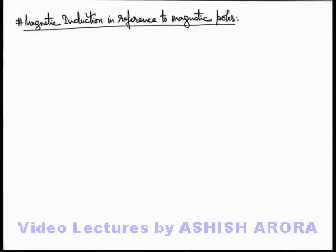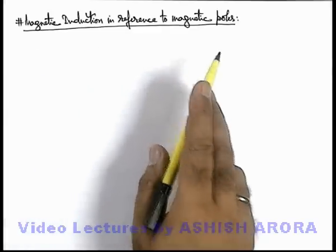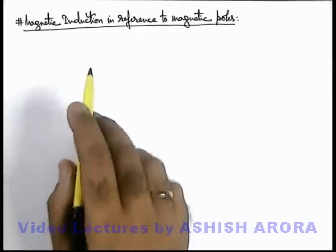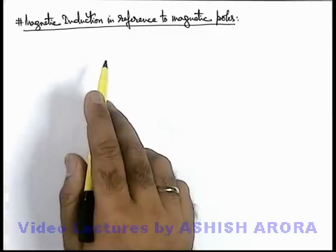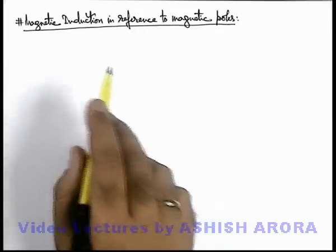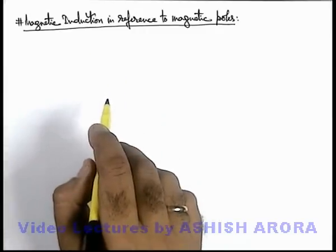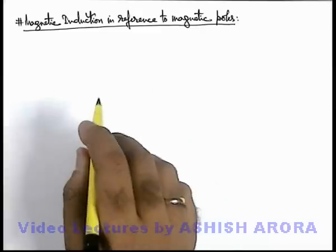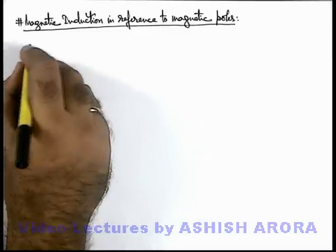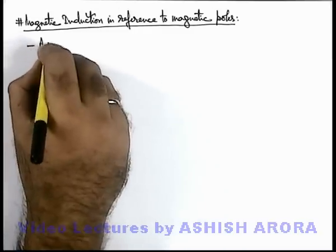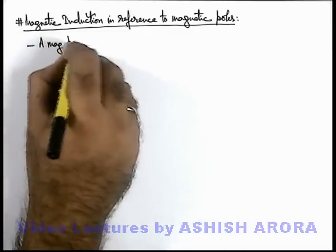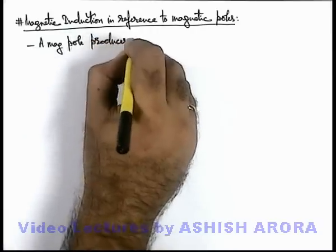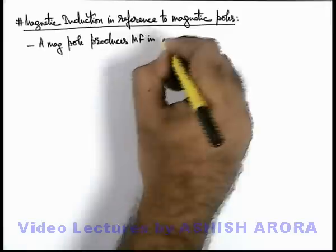Let us now study the magnetic induction in reference to magnetic poles. Till now we have studied that using Biot-Savart's law we can find out the magnetic induction in the surrounding of a current carrying conductor. Here we discuss the magnetic induction in the surrounding of magnetic poles. A magnetic pole produces a magnetic field in its surrounding.